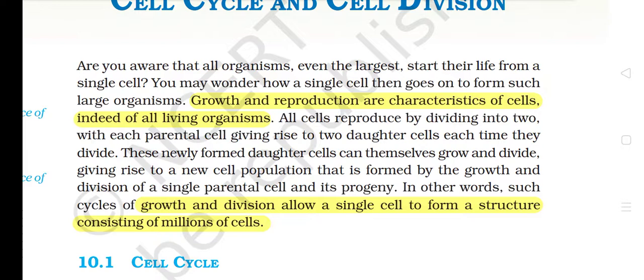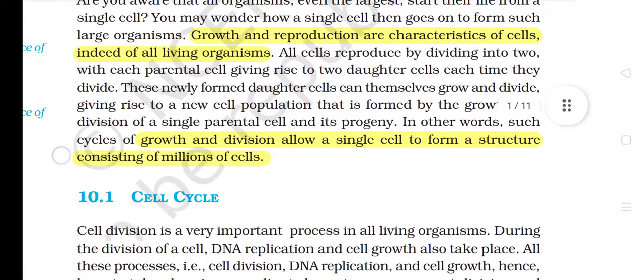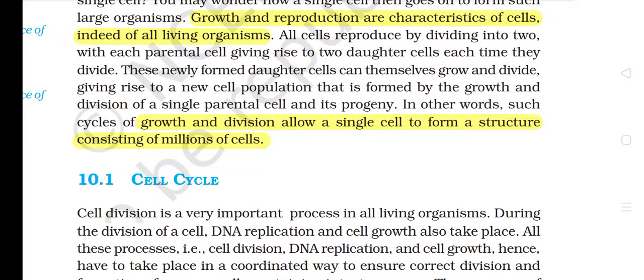All cells reproduce by dividing into two, with each parental cell giving rise to two daughter cells each time they divide. These newly formed daughter cells can themselves grow and divide, giving rise to a new cell population formed by the growth and division of a single parental cell and its progeny. In other words, such cycles of growth and division allow a single cell to form a structure consisting of millions of cells.